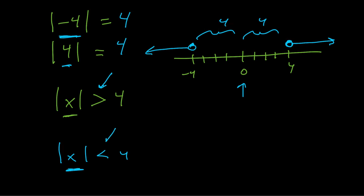If it's less than — x is less than four — that means the distance is closer to zero. You'd be looking at something from negative four to positive four, in between, because you're closer to zero than four units away.